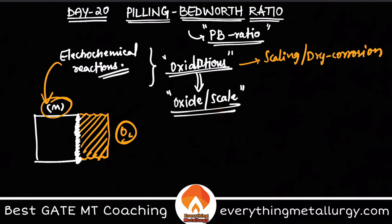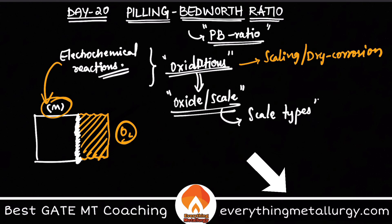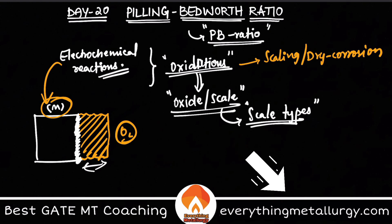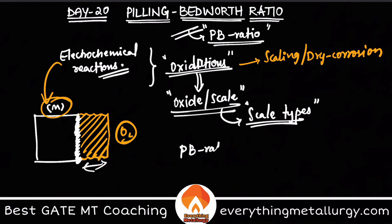We can classify scale types using the rate of oxidation — that means how the film thickness is increasing over time. This rate of thickness increase can easily be explained by the PB ratio, or Pilling-Bedworth ratio.